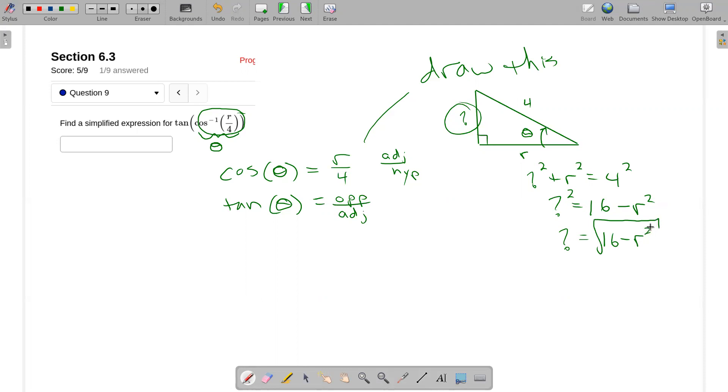And again, you cannot reduce this. The square root and the square do not cancel because the subtraction stands in the way. A square root symbol that has multiple things in it is like a parentheses. And you have to do what's inside the parentheses before you can deal with what's outside. And since we don't know what r is, we can't reduce the subtraction, which means we can't cancel a square and a square root. This is it. I am done. That is the simplest version of that expression. Question mark equals the square root of 16 minus r squared. Does not simplify.